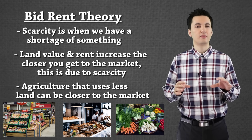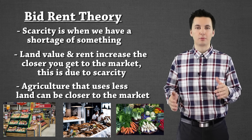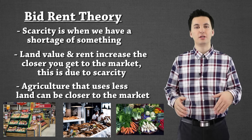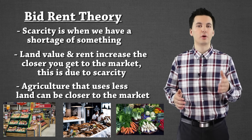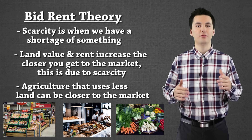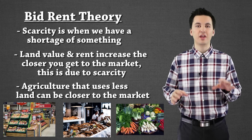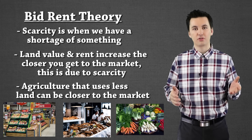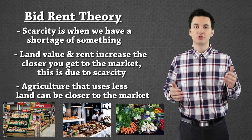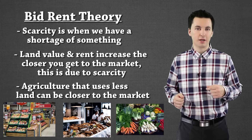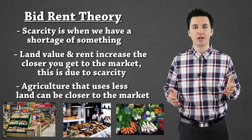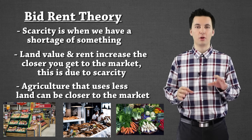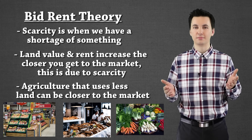So when we're looking at Von Thunen's model, people who are raising cattle or growing corn are going to be further away from the city because they need a lot of land. Since their transportation costs are not as high, they can just transport their products to the market — this way they save money and they maximize their profits. That's the goal of the model: farmers want to make money.